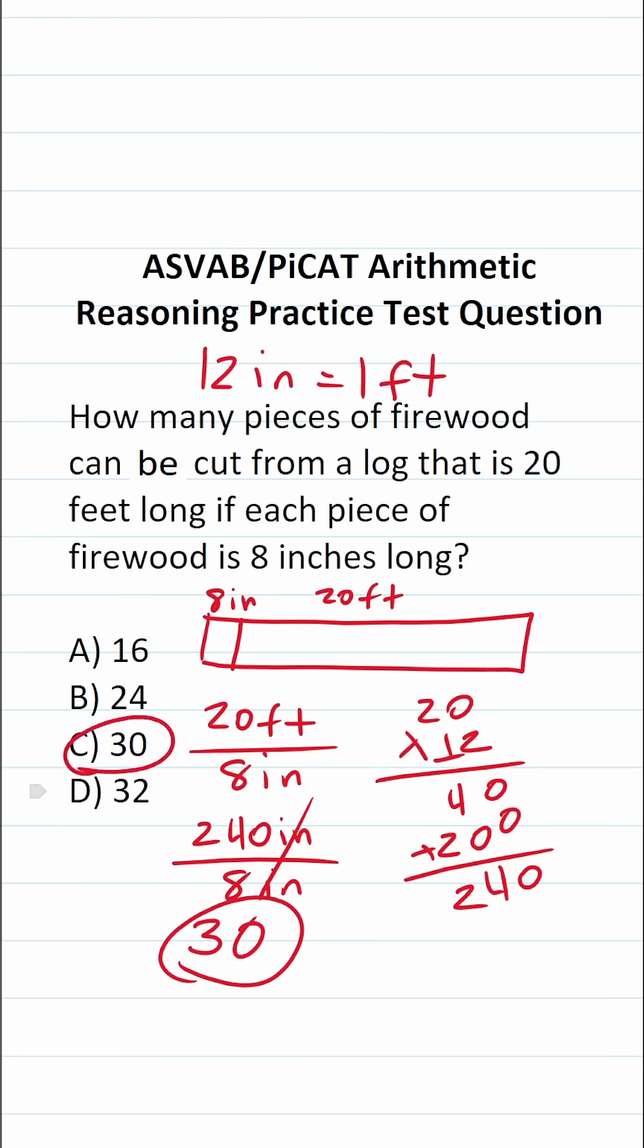So we can get 30 pieces of firewood from this log that is 20 feet long if each piece of firewood is eight inches long. So again, this one is C.